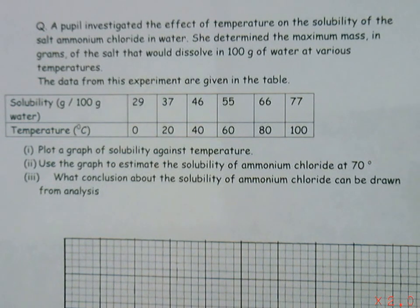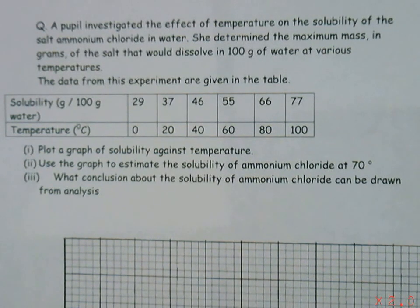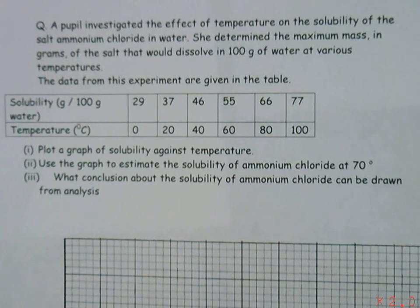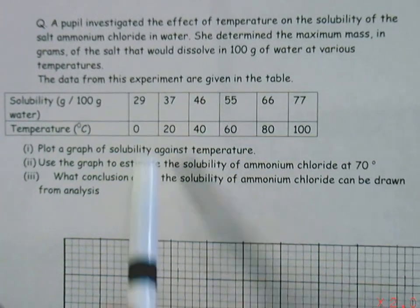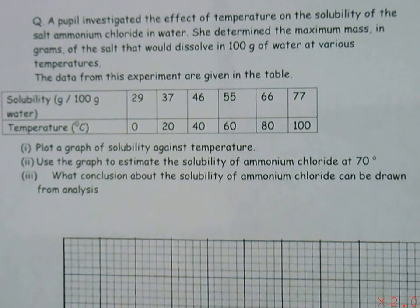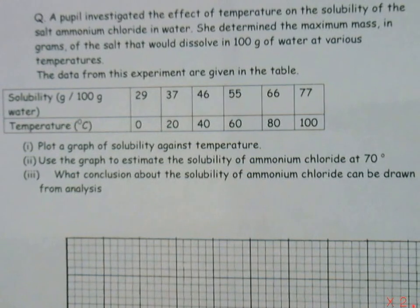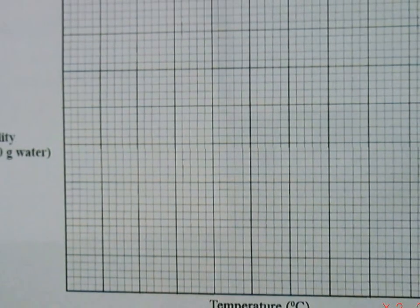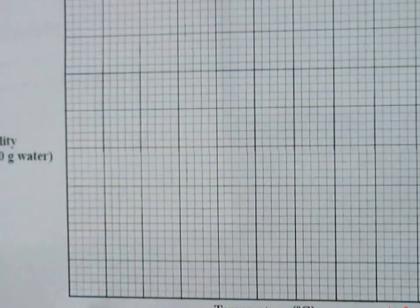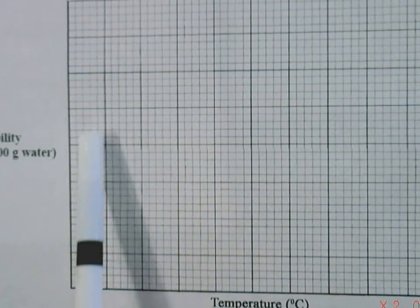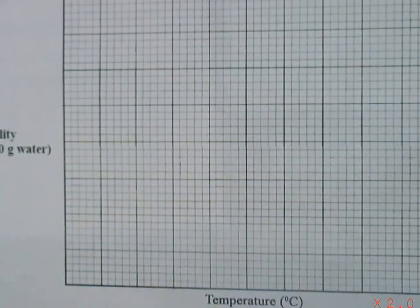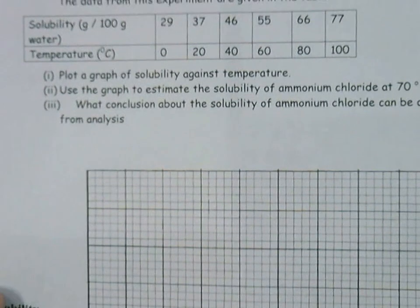The first thing we notice about the table is that the numbers aren't going exactly as we'd like them, not in 5s and 10s. For solubility, our numbers are quite awkward: 29, 37, 46 and so on. So we need to pick numbers that we're going to go up our graph in. If you look at the amount of space we have with our graph, we're going to put solubility on the y-axis. We have eight boxes, so you're going to have to go up in 10s. You have no choice but to go up in 10s.